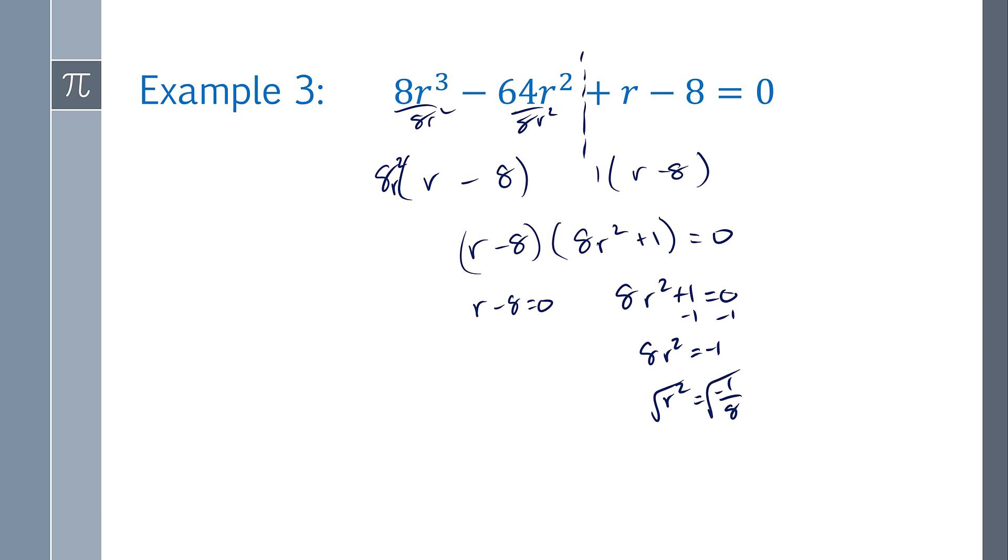Now if I square root both sides, I'm going to get an imaginary number. So r equals plus or minus, and then we're going to have the square root of 1 over 8i, because I'm taking out the negative out of the square root. And then I have the square root of 1 is 1, and then 8 is 2 root 2. And so I can rationalize that even further. And so that looks like that's going to be root 2 over 4i plus or minus. And then add 8.